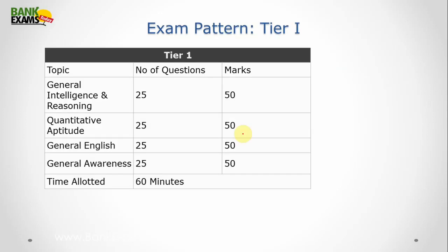Talking about the exam pattern for tier 1, it is divided into 4 sections like General Intelligence, Quantitative Aptitude, General English and General Awareness. Each section will have 25 questions each carrying 2 marks. So you have total 100 questions and 200 marks to be gained in 60 minutes or 1 hour. I think it is quite difficult but you have to prepare yourself well to achieve good score.